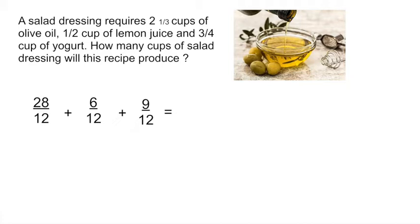Once you've done all that, you end up with the common denominator, which is 12. To add fractions, remember that you just add the numerators, the top numbers together, and the denominator, the bottom number, remains the same. So if you add 28 plus 6 plus 9, that gives you 43/12.